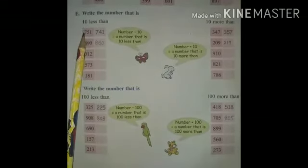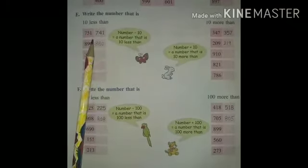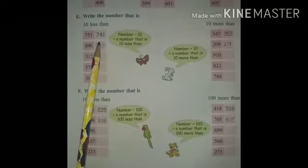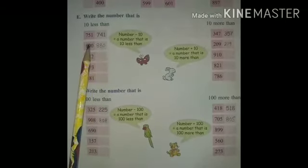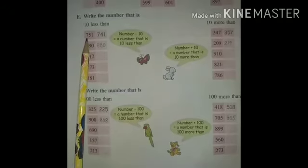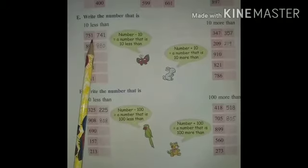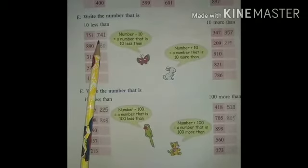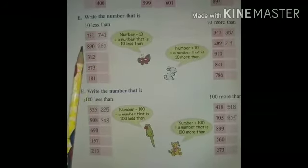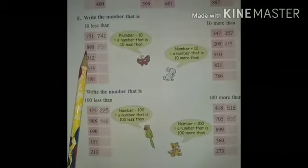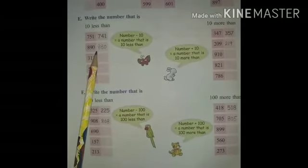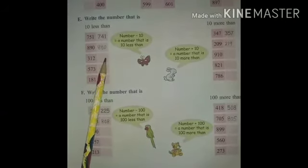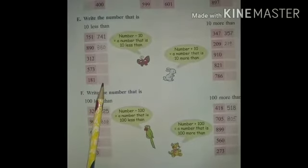Next, Point E — write the number that is 10 less than. We will subtract 10 from the given number and write the result. The question is 751 — 751 minus 10 gives 741. Next: 890 — 890 minus 10 gives 880. Okay, same as it is — these 3 questions you have to do as 10 less than.